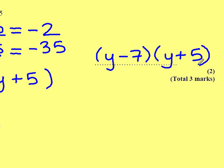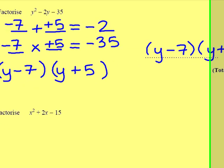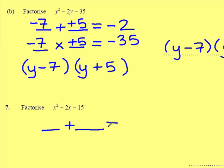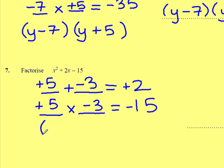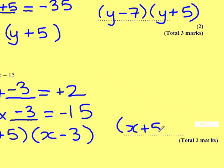Question 7. Factorise x squared plus 2x minus 15. I'm hunting for a pair of numbers again. This time, they need to add to make plus 2 and multiply to make minus 15. The clue is to always look at the minus 15 — ignore the minus. What numbers make 15? It's 3 and 5. The only way I'm going to make plus 2 is if I have plus 5 and minus 3. So, in factorised form, it's x plus 5 and x minus 3. And that gets me two marks.